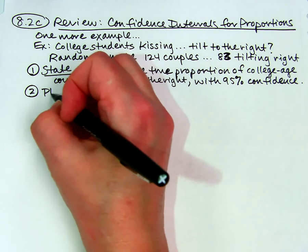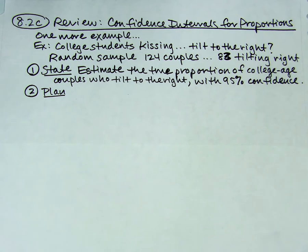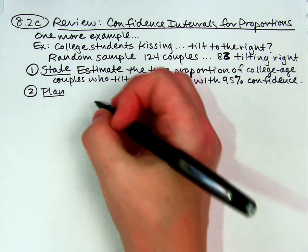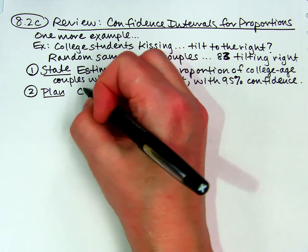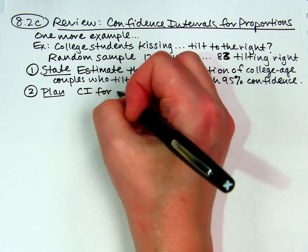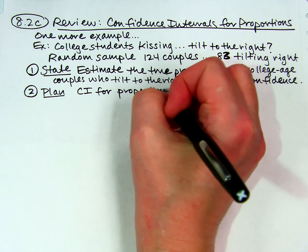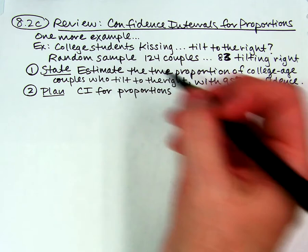Step two: Plan. We're supposed to name the procedure and check our conditions. The name of this is a confidence interval for proportions — you're welcome to abbreviate it as CI for proportions, or say it's a one-sample Z interval for proportions, whatever you prefer. So that's our name.